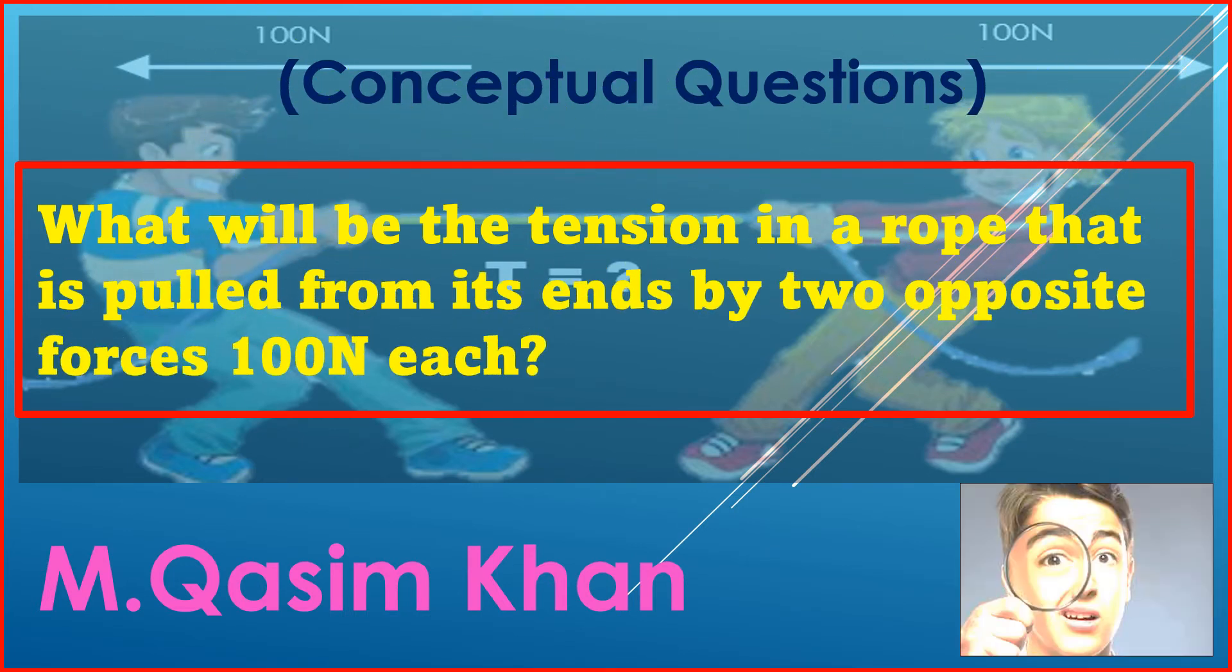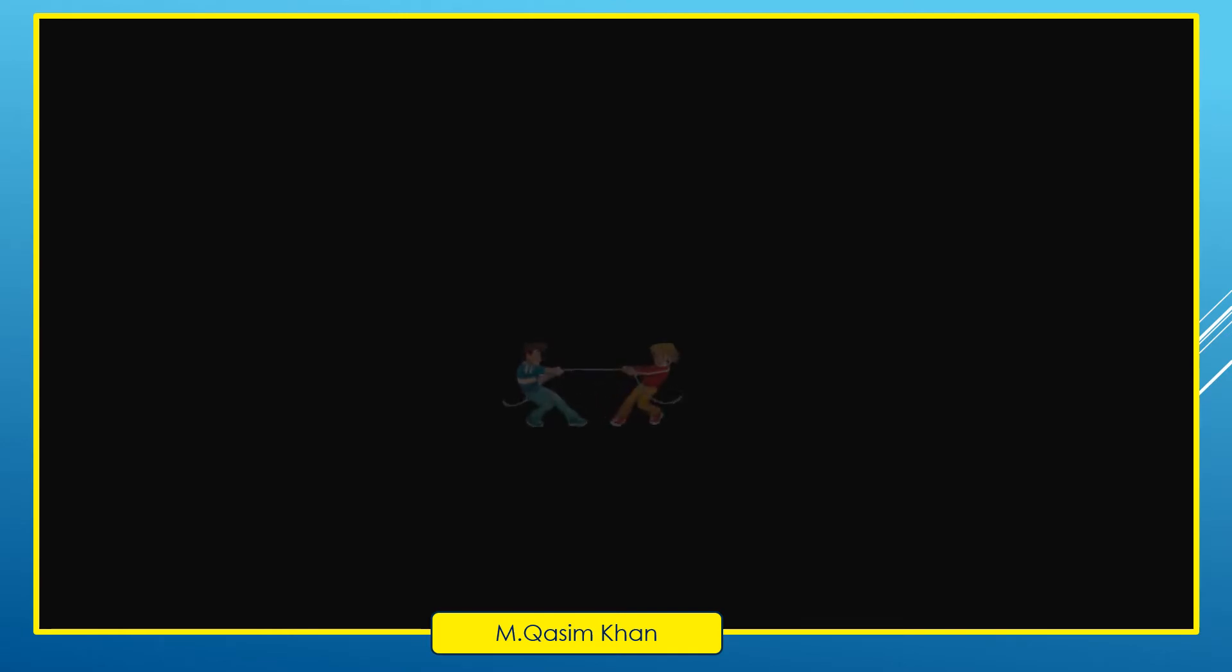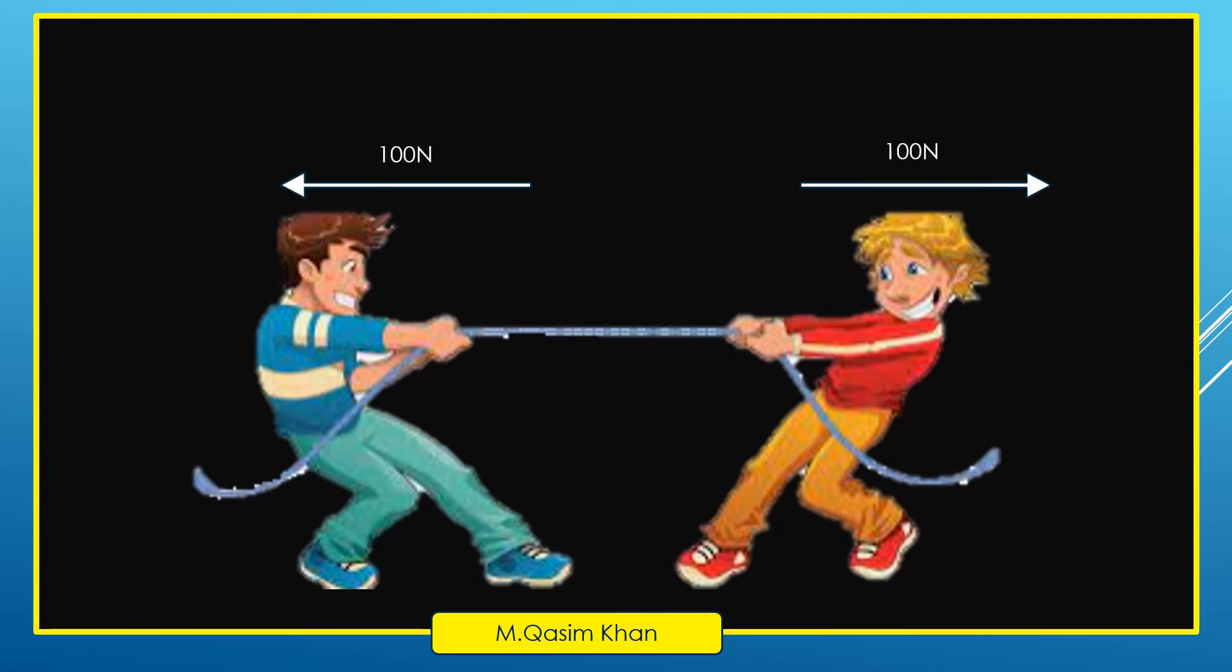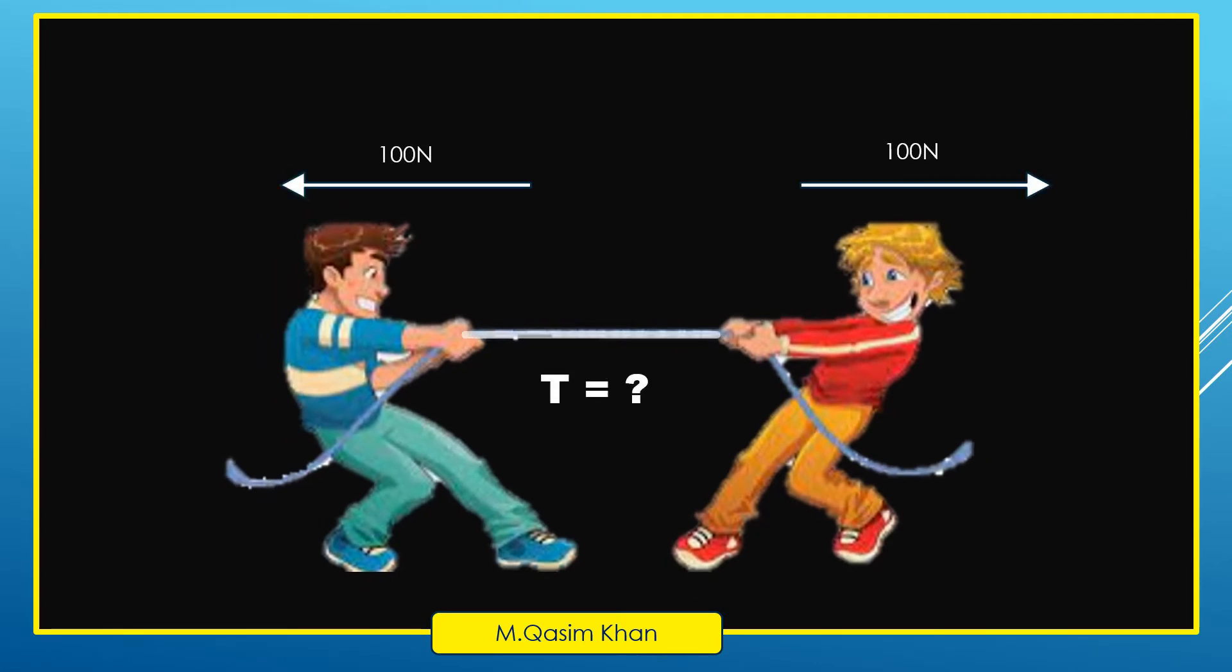Consider two boys who are pulling the rope in opposite directions and exerting a force of 100 Newton each. We are supposed to find out the tension which is developed in the string.